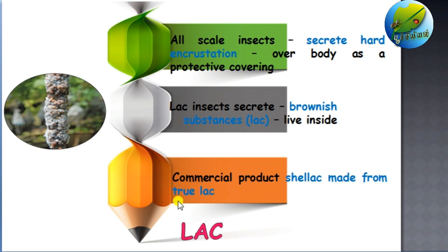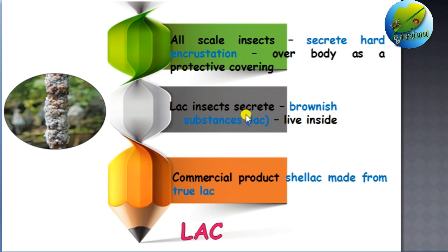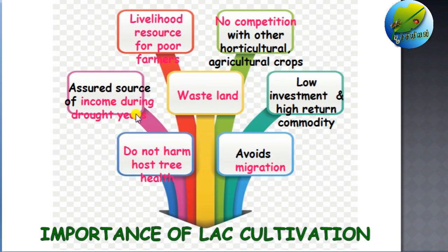As lac insects are placed in the Coccoidea super family, these lac insects secrete a brownish substance and live inside it. The secretion comes from the hypodermal glands or external dermal glands located all over their body. They secrete the substance and live inside it — this is called the cell. When a particular cell is scraped out, it is called shellac, used for commercial purposes.